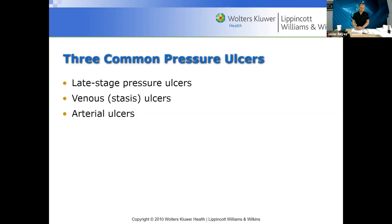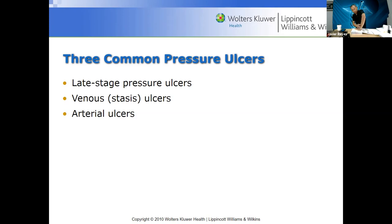Venous stasis ulcers are very chronic and hard to get rid of, but they can be managed if patients are compliant. The main cause is excessive moisture under the skin, and they can be managed if swelling in the legs is controlled. They're seen on the lower legs, usually around the ankle area. They occur when there is loss of elasticity and decreased efficiency of the valves in the veins, causing swelling and skin breakdown.